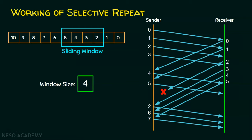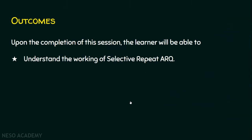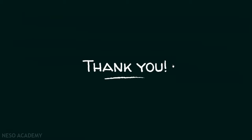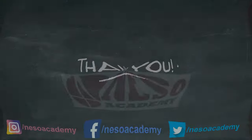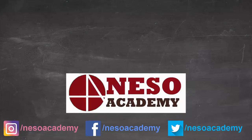I hope you now understand how selective repeat differs from go-back-N ARQ. In terms of number of retransmissions, selective repeat will be fewer than go-back-N ARQ. So selective repeat ARQ is somewhat more efficient than go-back-N ARQ. I hope you understood the working of selective repeat ARQ. Thank you for watching. Bye-bye.